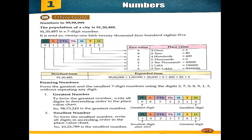Then we are going to learn about standard form. Then we are going to learn to form the greatest number and smallest number using digits. In this chapter, we are going to learn by using seven digits — to make the greatest seven-digit number and smallest seven-digit number. The digits may be different.